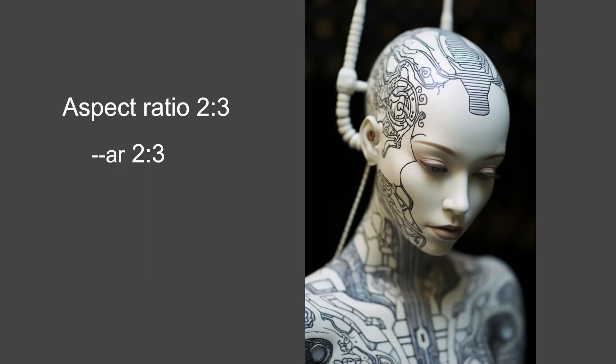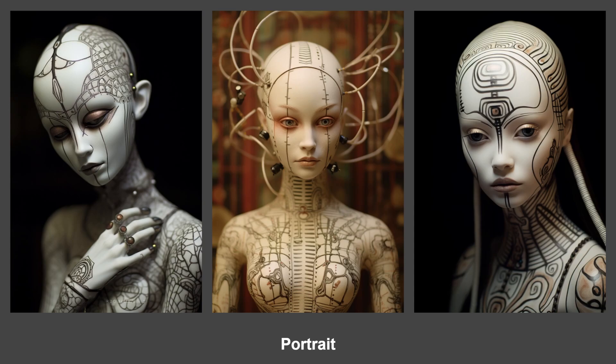Here is aspect ratio 2:3. I'm adding --AR 2:3 at the end of the prompt. This is a portrait and now I can see immediately that compared to the square one, I see much more of the torso and there's also space above the head. This looks more like what I would expect a portrait shot to look like — not necessarily portrait photography, just a shot. So I'm simply guiding MidJourney to give me a certain amount of the subject in the image.